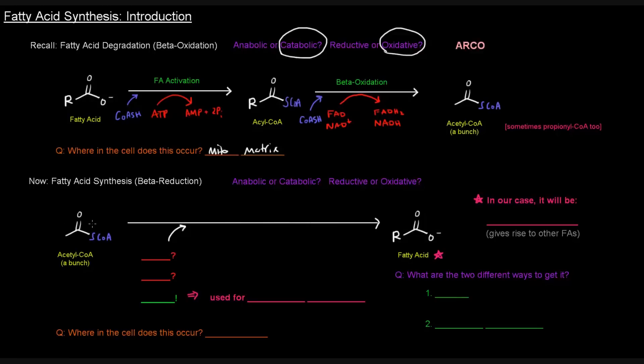In this process, instead of taking a fatty acid and breaking it up into a bunch of acetyl-CoAs, we're going to take a bunch of these two-carbon molecules and link them together to make a fatty acid. That will be catalyzed by a certain enzyme complex called fatty acid synthase. This process is anabolic, and if it's anabolic, according to ARCO, it's going to be reductive.